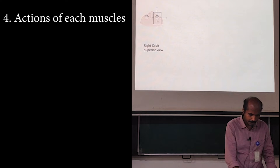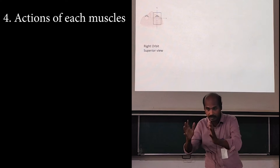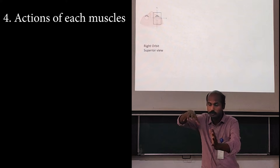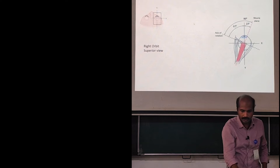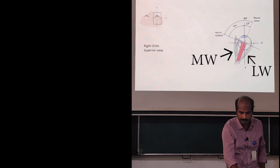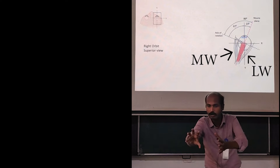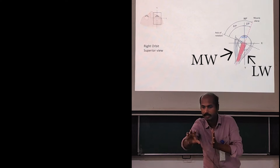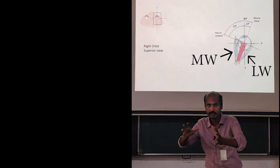This picture is showing you the right orbit from the superior view. This is the eyeball in the orbit. This is the medial wall and this is the lateral wall. The eyeball is located anteriorly in the orbit and you have all the extraocular muscles posteriorly.